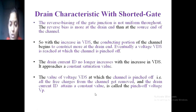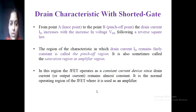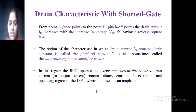Since there are no free charges in the channel, ID remains constant, and that voltage is known as the pinch-off voltage. From point A (knee point) to point B (pinch-off point), the drain current ID increases with increasing voltage VDS following a reverse square law. The region in which drain current ID remains fairly constant is called the pinch-off region, also called the saturation region or amplifier region. In this region the JFET operates as a constant current device, since the output current remains almost constant — it is the normal operating region where the JFET is used as an amplifier.